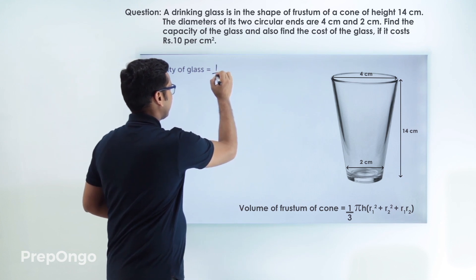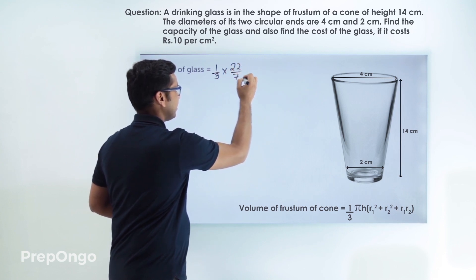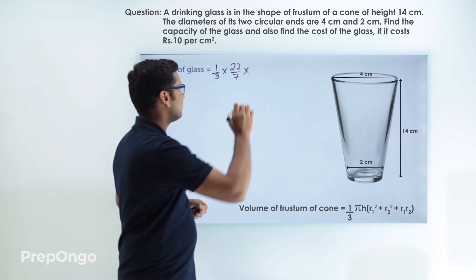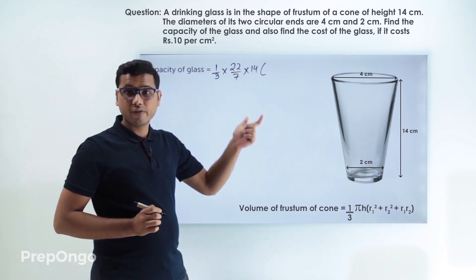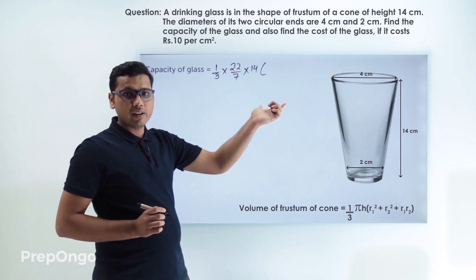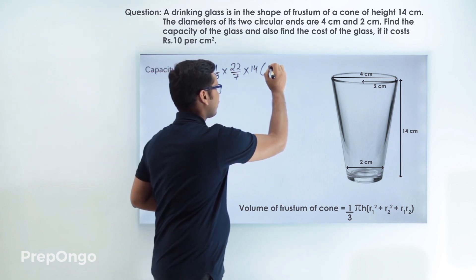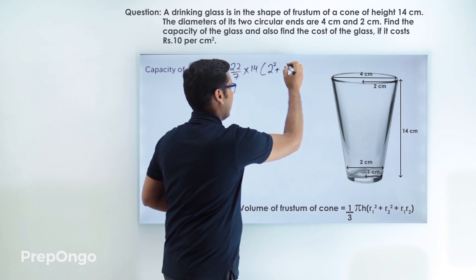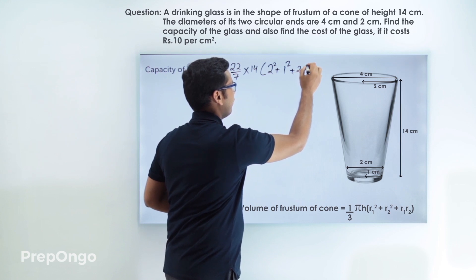So this is one-third into pi, which is 22 by 7 since it's not given. The height of this frustum is 14. Now the diameter of the top is 4, so r1 will be 2 centimeters, giving us 2 squared. The diameter of the bottom is 2, so r2 will be 1, giving us 1 squared plus 2 into 1.